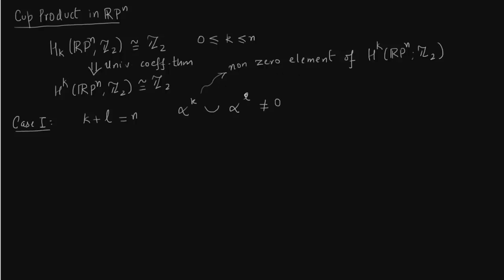So alpha k is the non-zero element of H^k, alpha L is the non-zero element of H^L, and H^L you can write as H^(N minus k). So you take cup product of these two and this will be non-zero. This is by application of the Poincaré duality theorem.